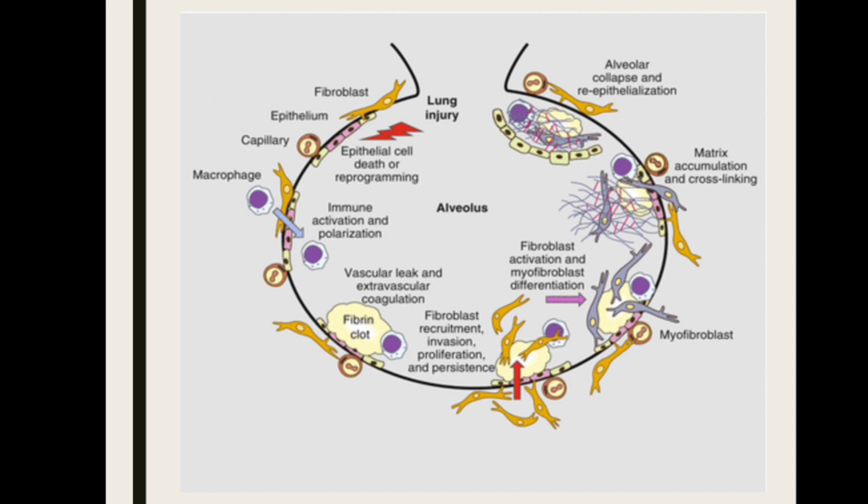Lung injury causes inflammation, pulling macrophages into the alveoli. Then there is fibroblast recruitment; fibroblasts start proliferating and persist, leading to fibroblast activation and myofibroblast differentiation. This results in deposition of collagen, elastin, and fibrous tissue, leading to fibrosis of the lung.